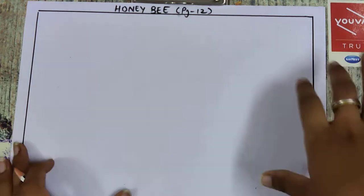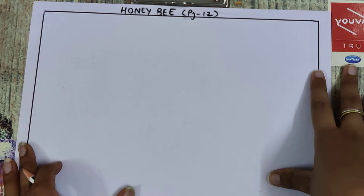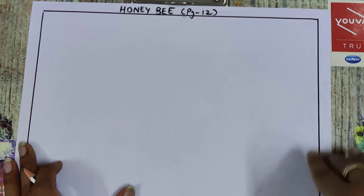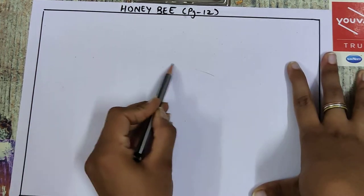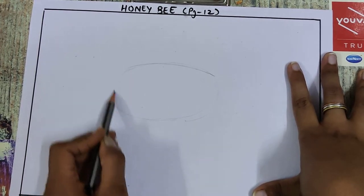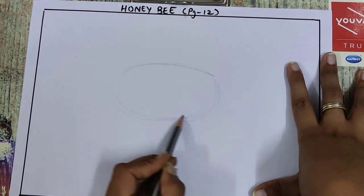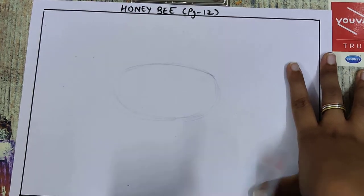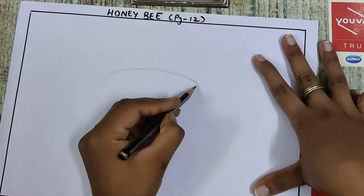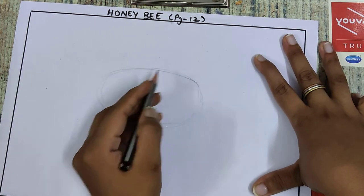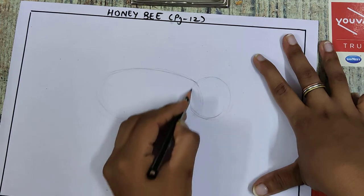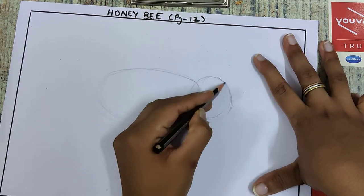Hello students, today your drawing topic is honeybee. I'm going to teach you how to draw a honeybee. First step is you have to draw an oval shape — a big oval for the honeybee body. After this, you have to draw a circle here. This is your basic structure. First of all, you have to draw a basic structure for the final drawing.